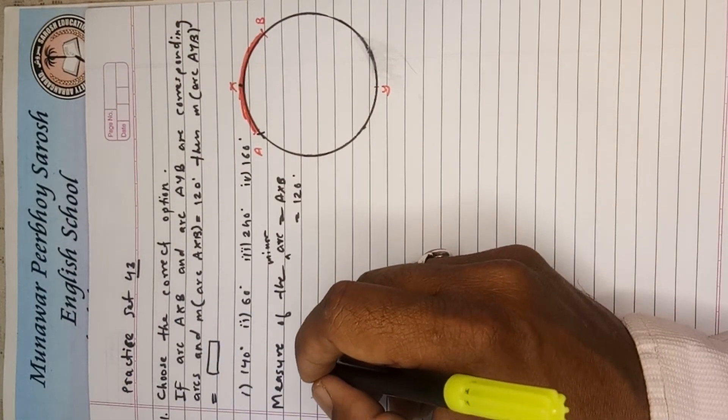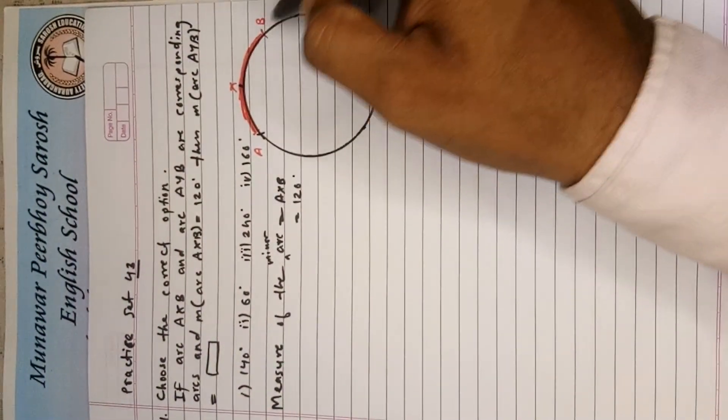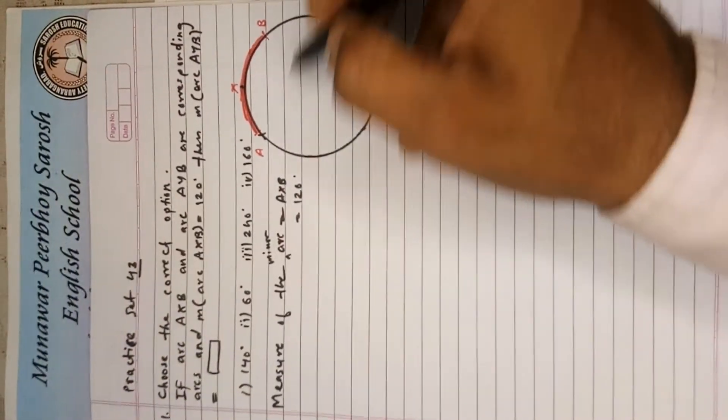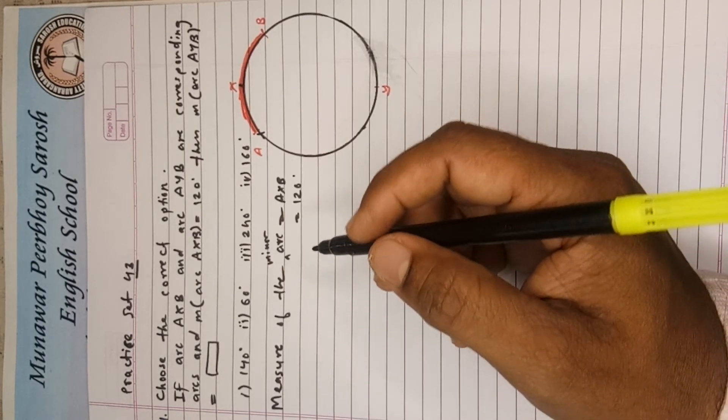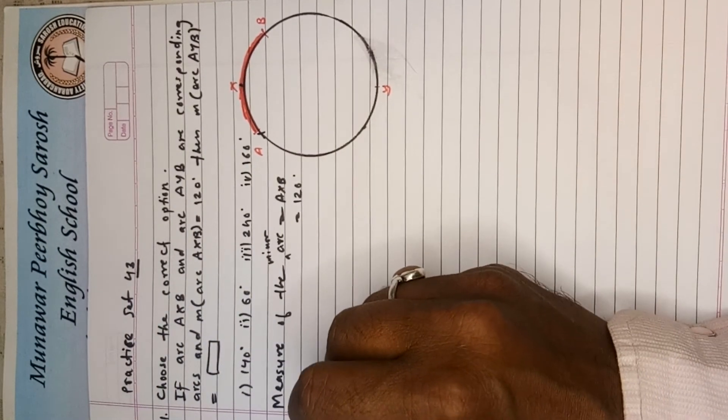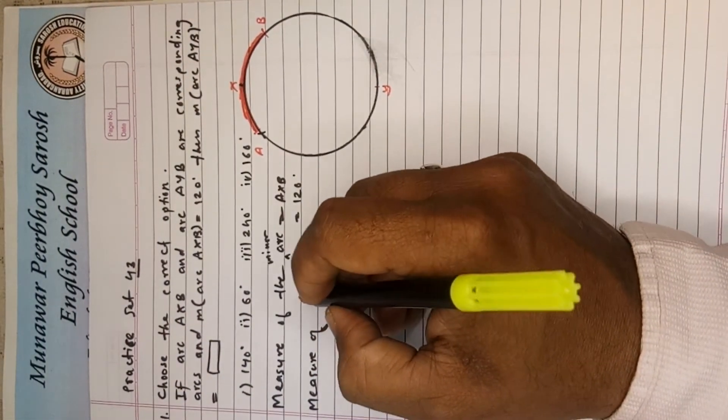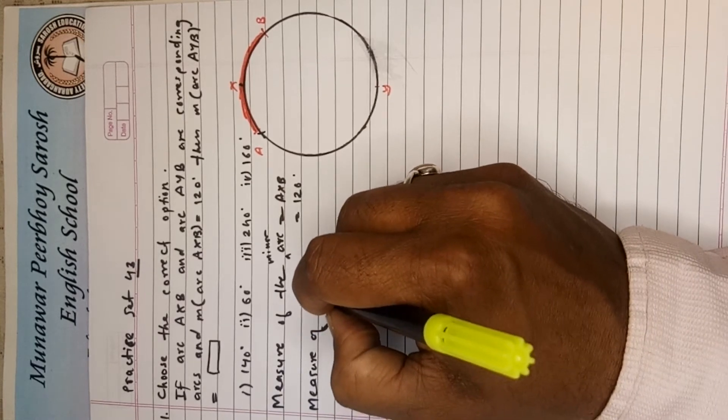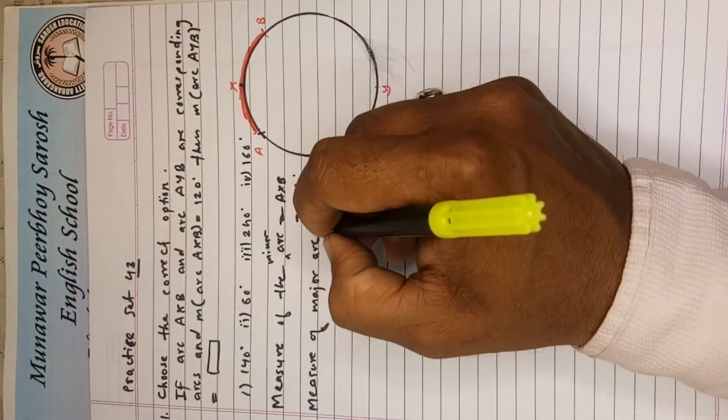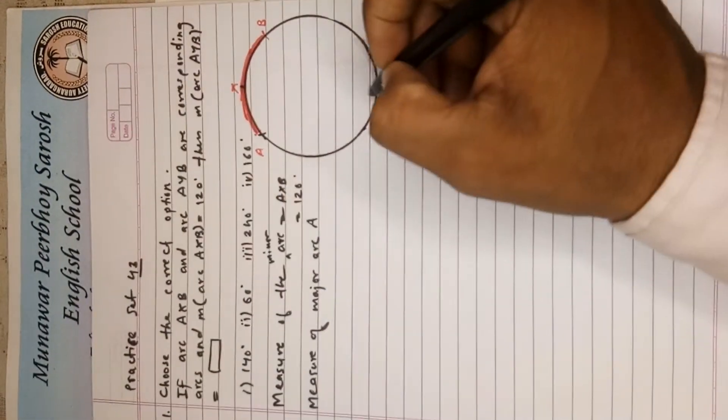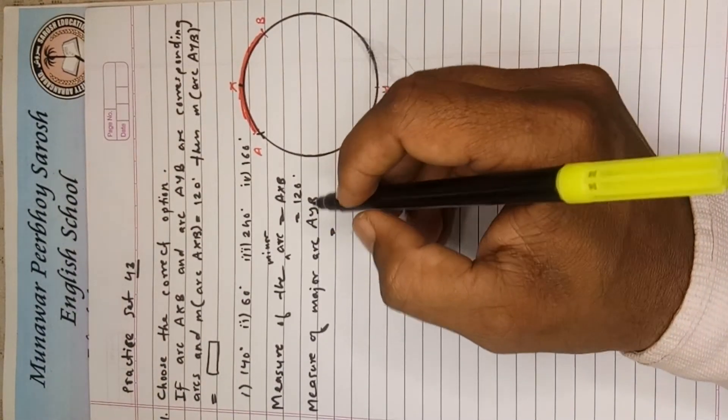And they are asking us to find the major arc of the arc AYB. This is the bigger arc or the major arc AYB.